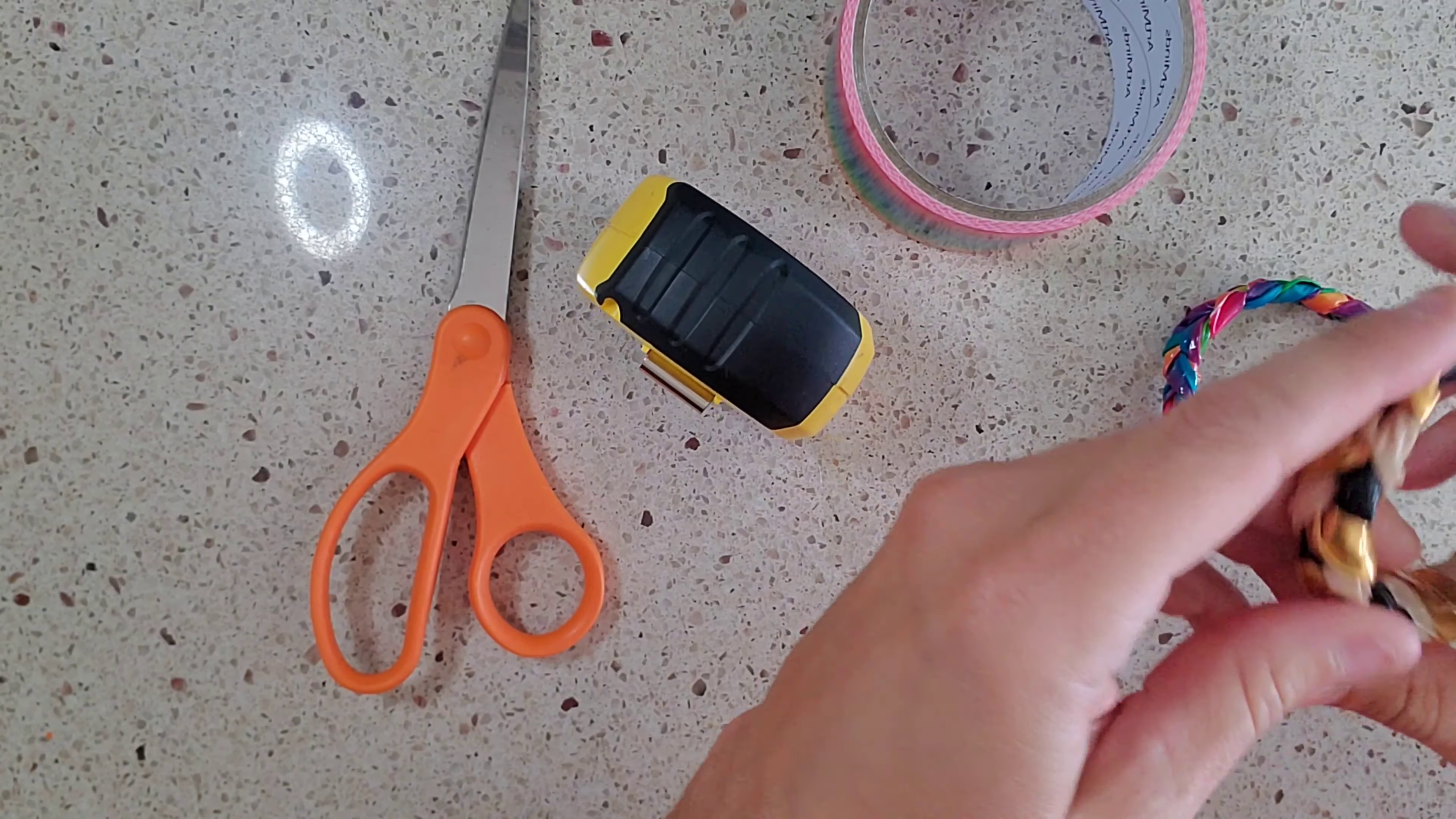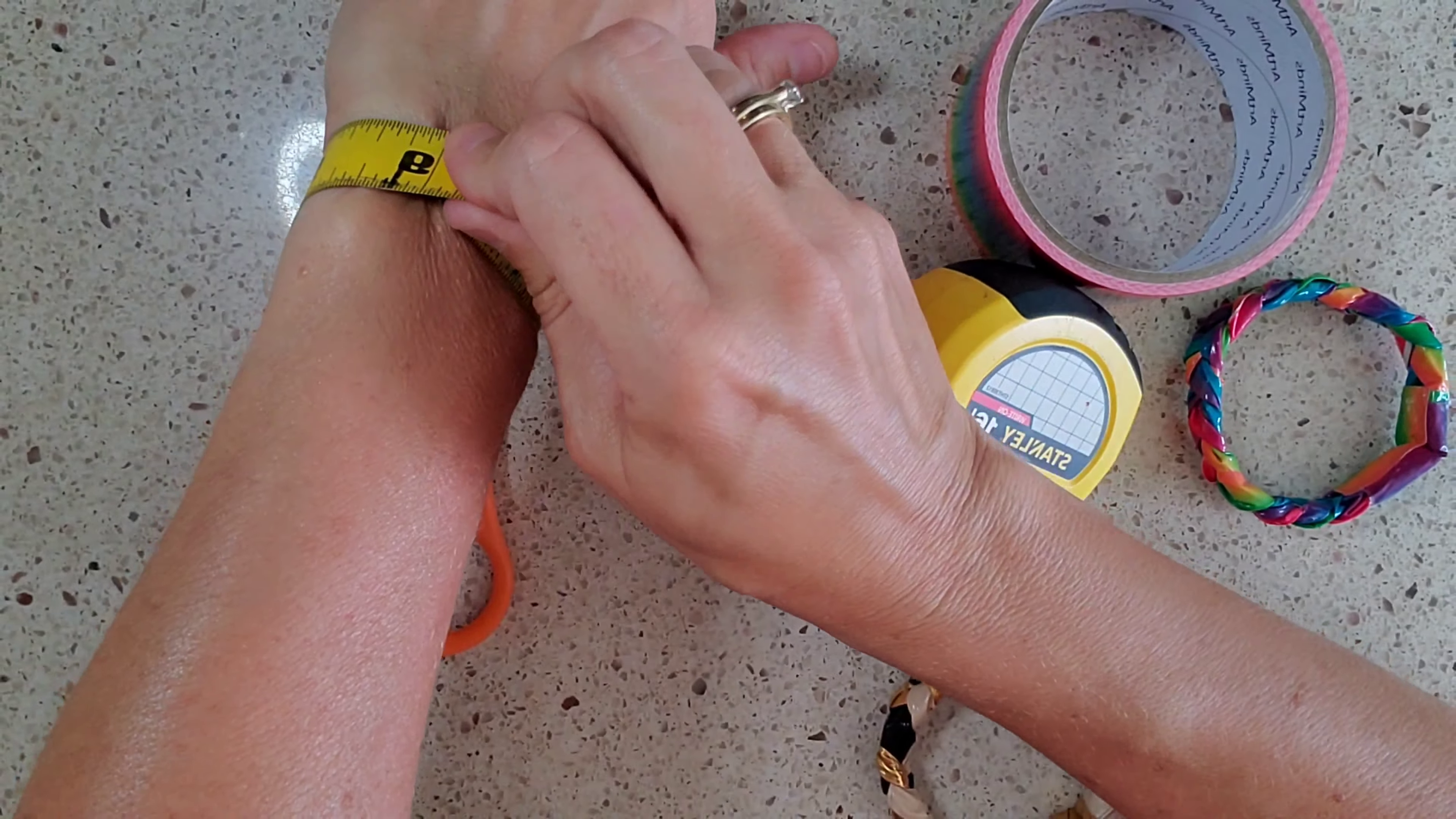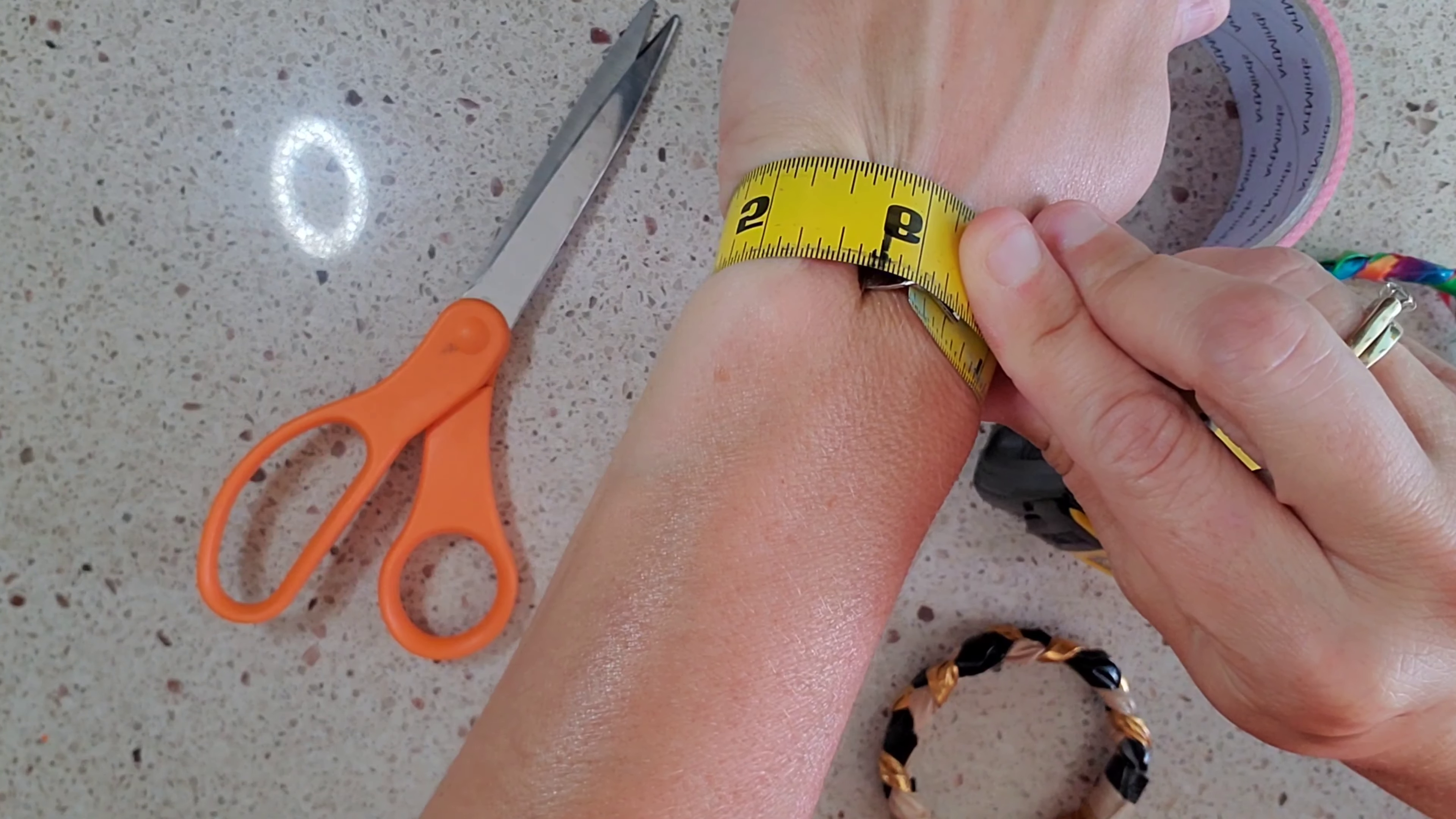To give you some measurements, my wrist is six inches around and how I measured that was just with a measuring tape around my wrist. And if you see there, it is about six inches for my wrist.